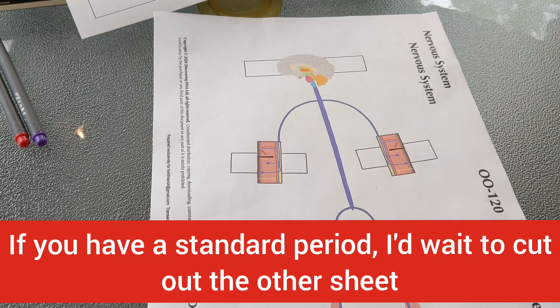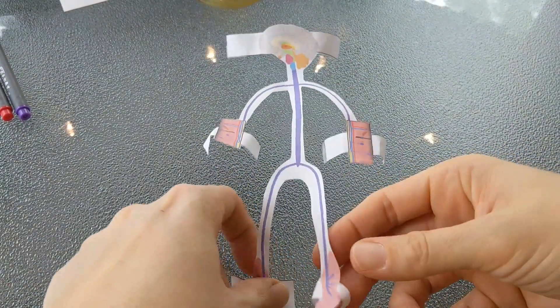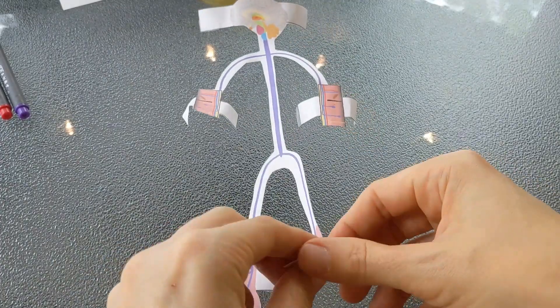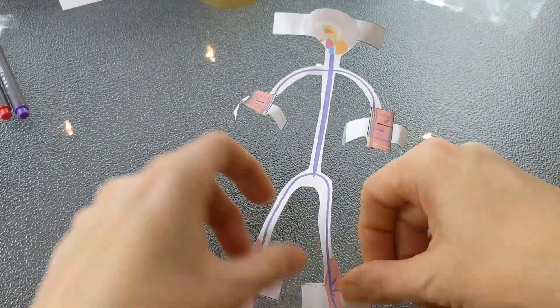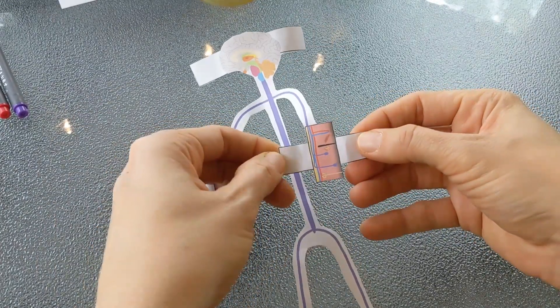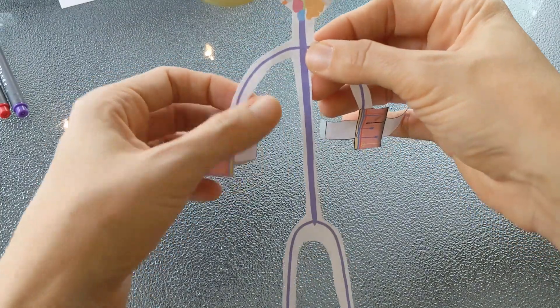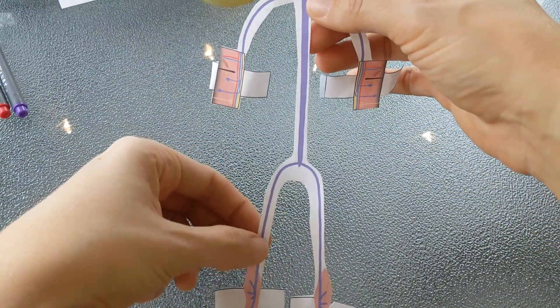And then we will do the neurons on a separate day. So just cut out the nervous system for now. Here is my nervous system, I already practiced so I already taped it but I'm going to go ahead and undo that so you can see. For the rectangles I did cut on the black lines, but when it came to the arms and the torso I left myself a little leeway.